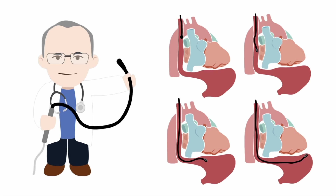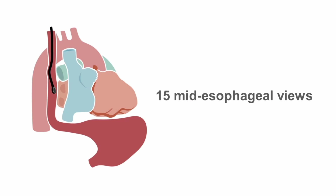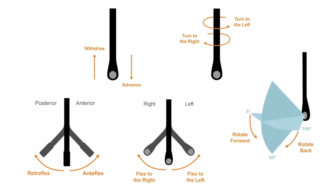In this lesson, we're going to look in more detail at each of these views, beginning with the mid-esophageal views. According to the recommendations of the American Society of Cardiology and the Society of Cardiovascular Anesthesiologists, there are 15 distinct mid-esophageal views. These views are obtained and optimized using a variety of probe manipulations, and although the views are principally obtained at a mid-esophageal level, some withdrawal or advancement of the probe might be necessary to optimize the image.